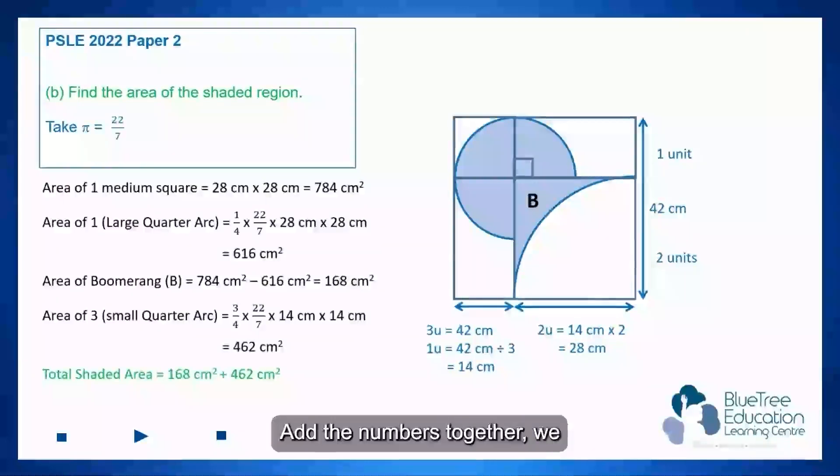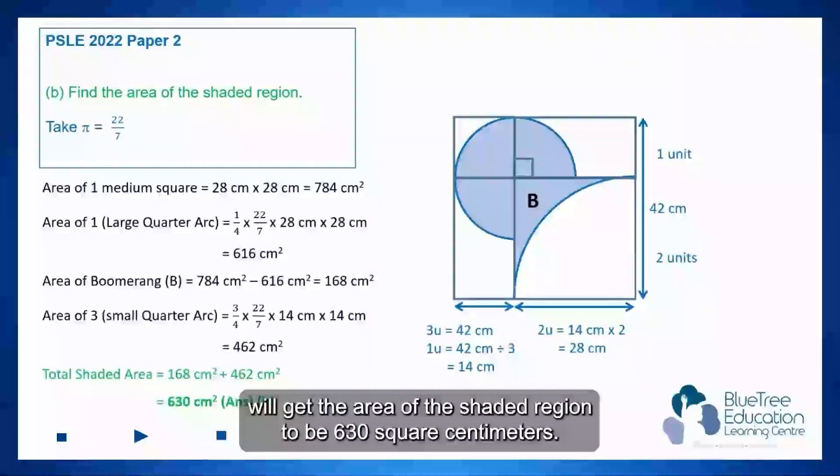Add the numbers together, we'll get the area of the shaded region to be 630 square centimeters.